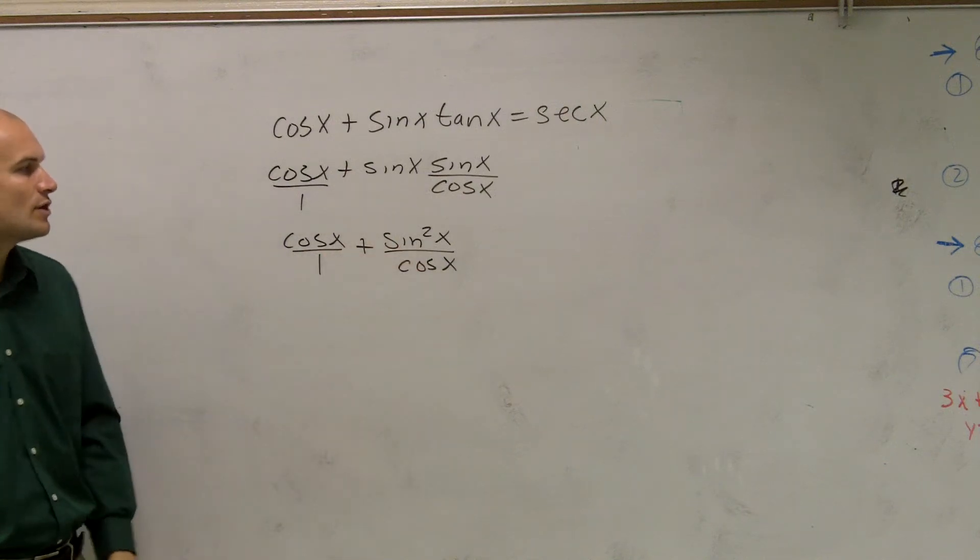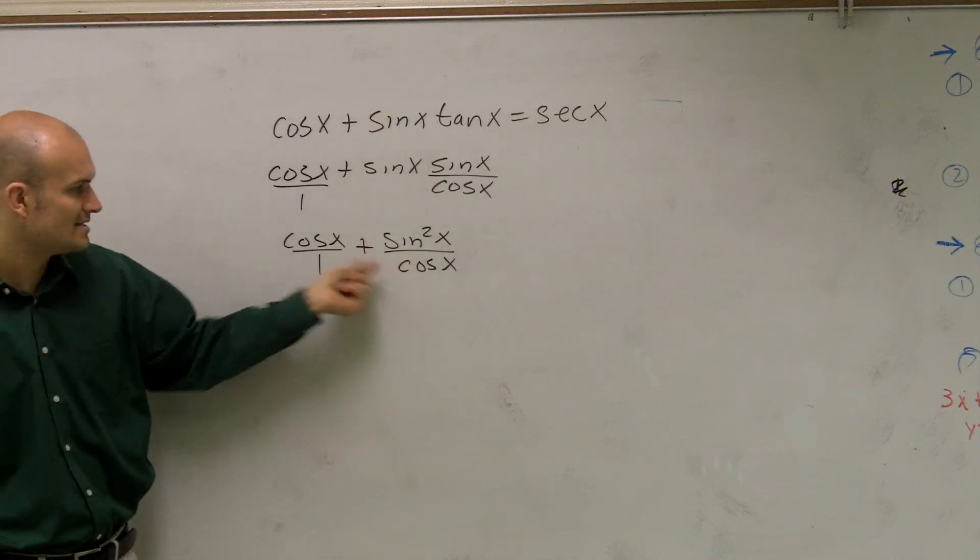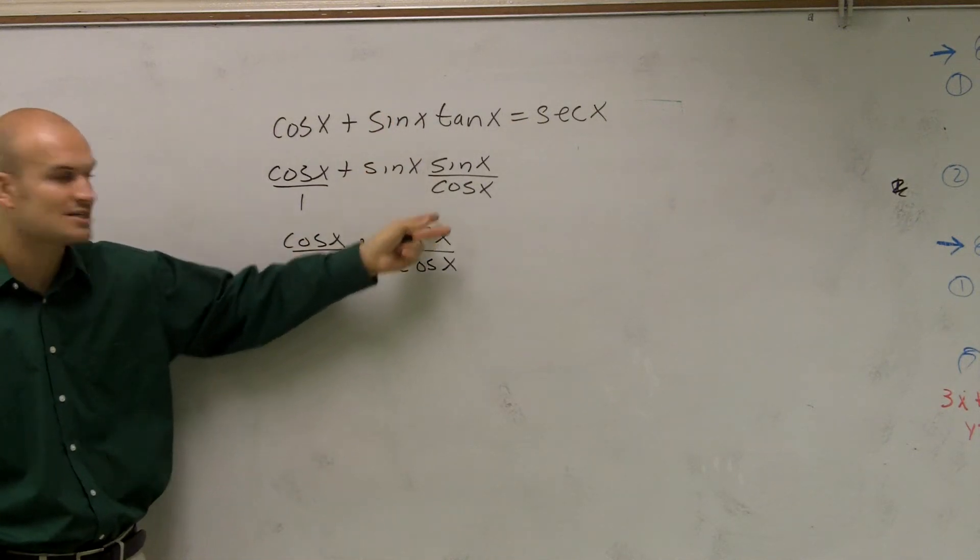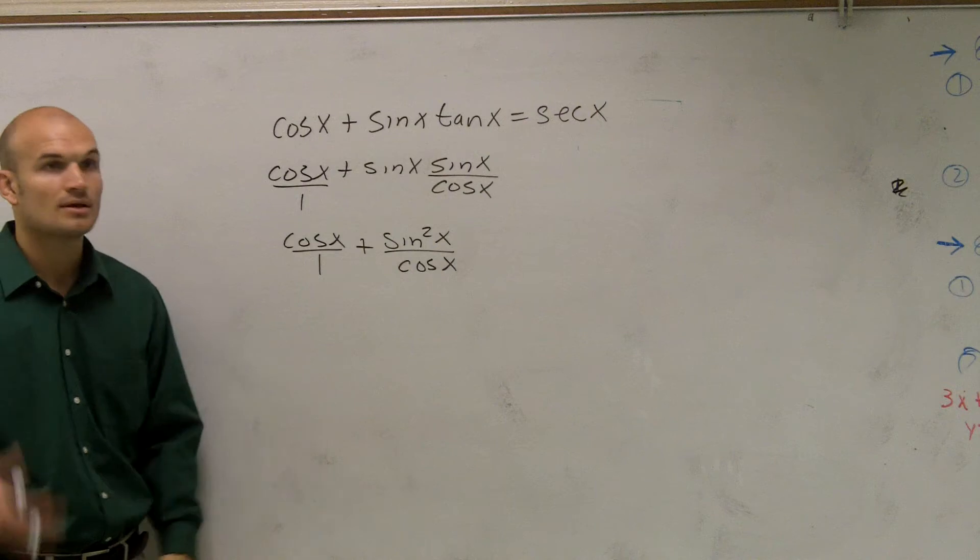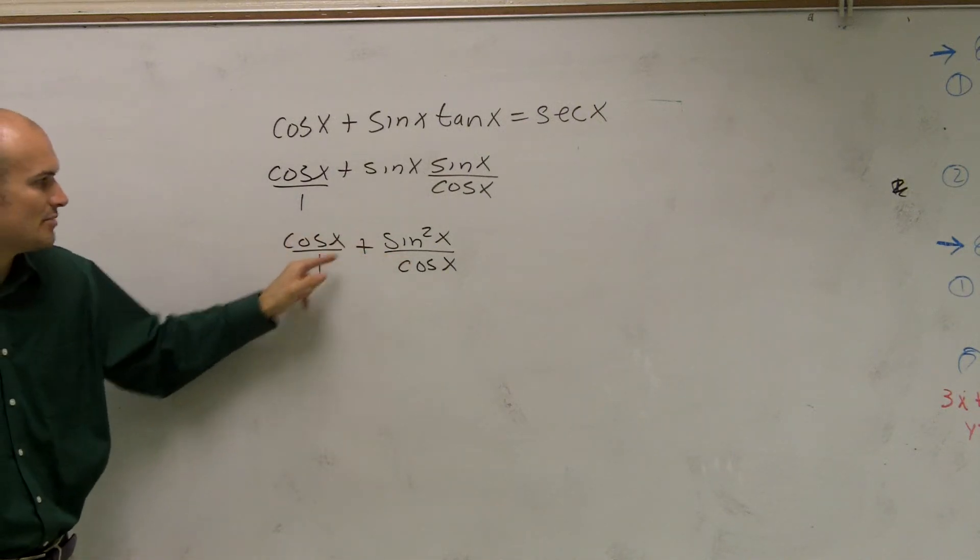However, now I have it over cosine. So I still need to combine these two. So I need to combine this, cosine over 1 plus sine squared of x over cosine of x. What I'm going to have to do is obviously get this common denominator. So the common denominator between 1 and cosine is going to be cosine.